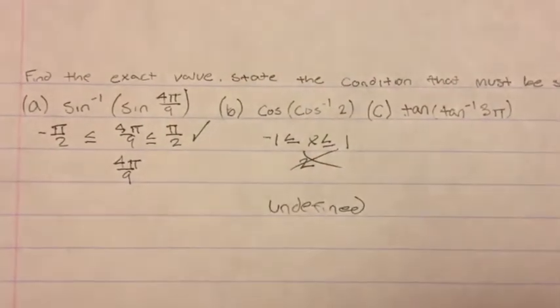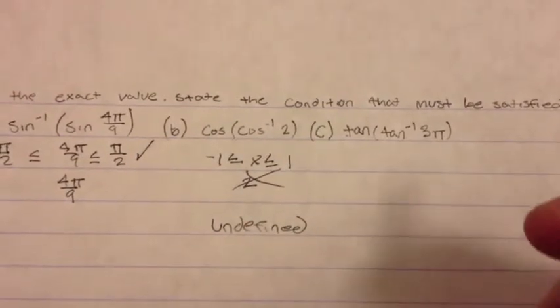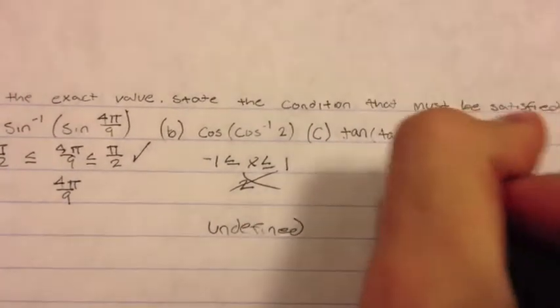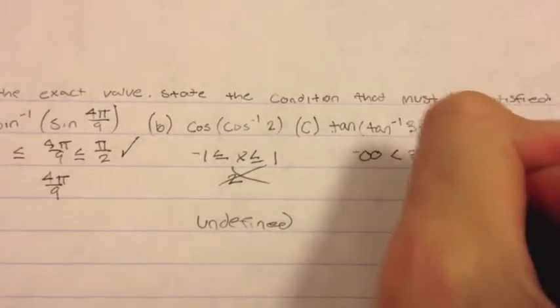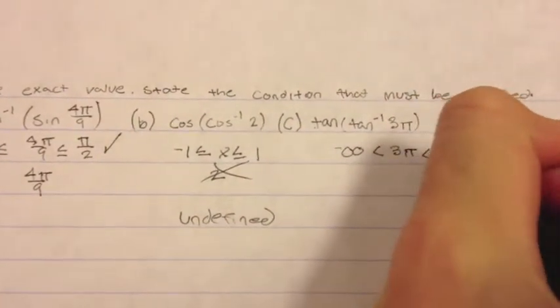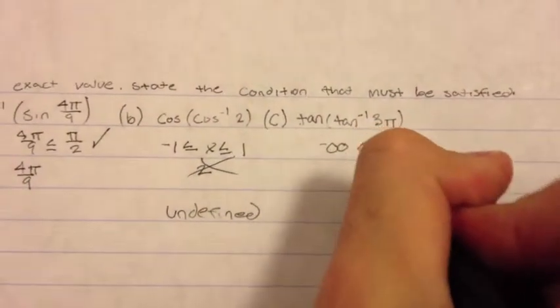And for c, the domain of inverse tan is negative infinity to infinity. And since 3 pi is in that domain, your answer is just 3 pi.